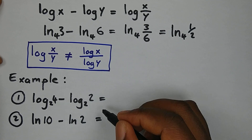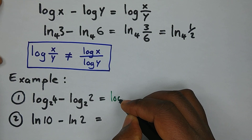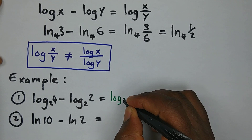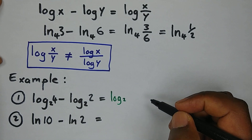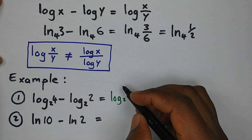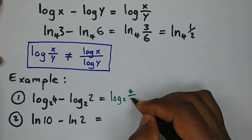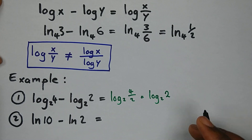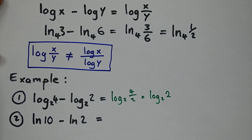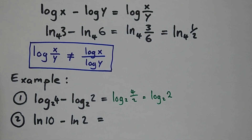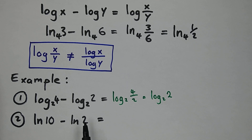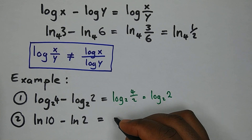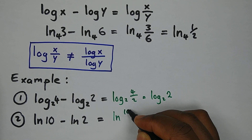Taking our examples: are both conditions satisfied — same base, and the logs are subtracting? Yes. So we get a common base of 2 and divide the arguments: 4 over 2, giving log 2 in base 2. We'll leave it there for now as we haven't covered that rule yet. For natural logs: same bases, so we get ln(10/2) = ln 5.